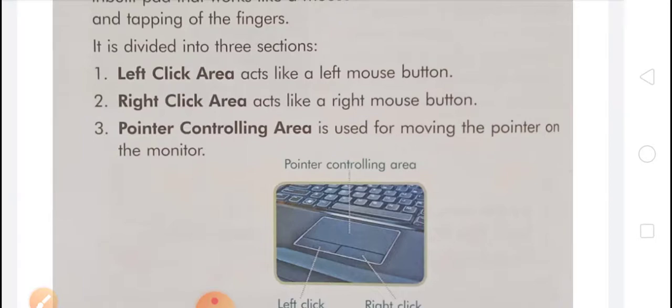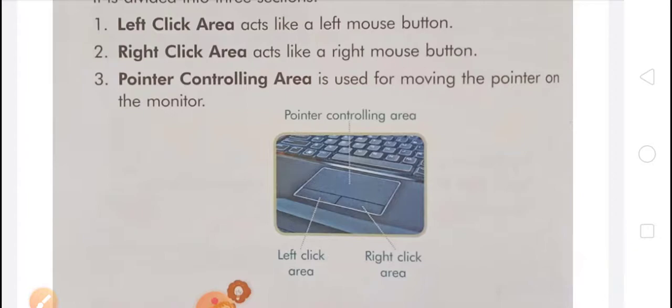You have to read Chapter 4, which is about handling a mouse and touchpad. The subtopics include computer mouse, types of mouse — ball mouse and optical mouse — and mouse actions: click, double click, right click, drag and drop, and scrolling. Also read about the touchpad and underline any difficult words. See you in the next class.